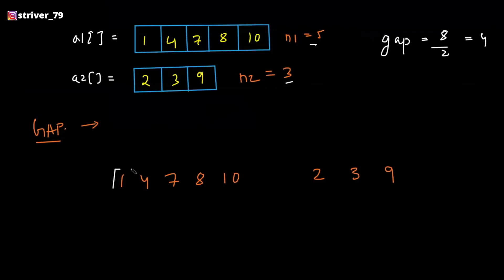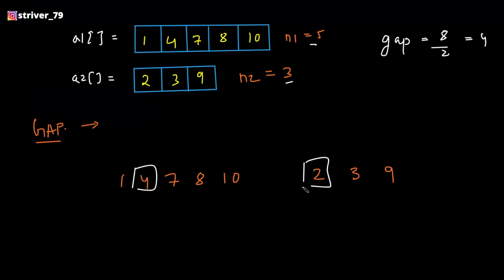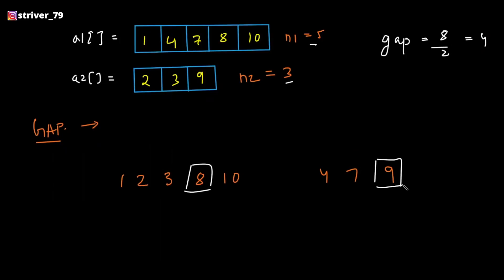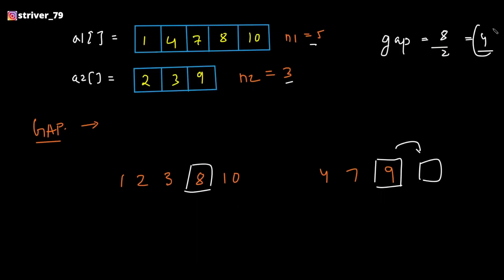The first pointer points at index 0 and the second pointer points 4 positions ahead. Is 1 greater than 10? No, so we don't swap and move the pointers ahead. Now the pointers stand at 4 and 2 — 4 is greater than 2, so we swap. Move the pointers: 7 is greater than 3, so swap 7 and 3. Move ahead: 8 is smaller than 9, so no swap. When we try to move ahead, the second pointer moves out of bounds. So the first operation for gap 4 is done.